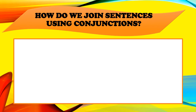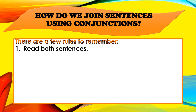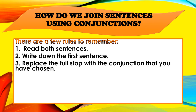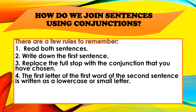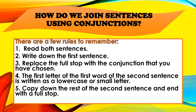How do we join sentences using conjunctions? There are a few rules to remember. Rule 1: Read both sentences. Rule 2: Write down the first sentence. Rule 3: Replace the full stop with the conjunction that you have chosen. Rule 4: The first letter of the first word of the second sentence is written as a lowercase or small letter. Rule 5: Copy down the rest of the sentence and end with a full stop. Remember these rules well, boys and girls.